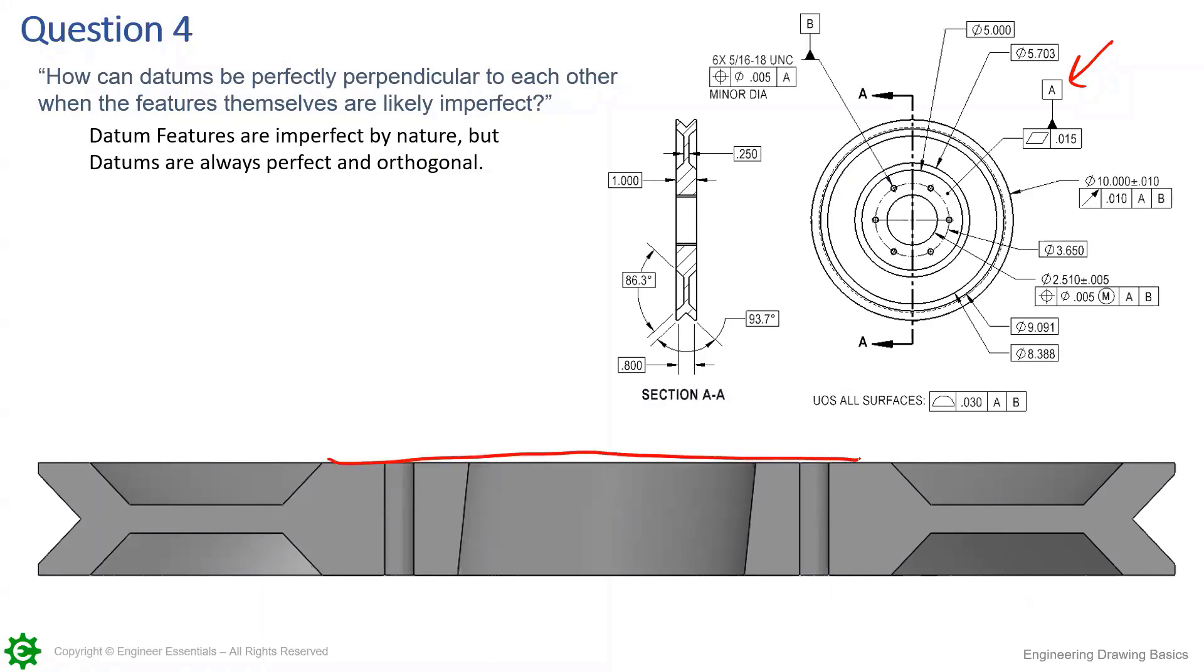How do we make sure that if this part is irregular, we're using these patterns here. Let's forget this as datum B, let's imagine this ID is now datum B. Let's use this ID as datum B and now we're looking at this bolt pattern.